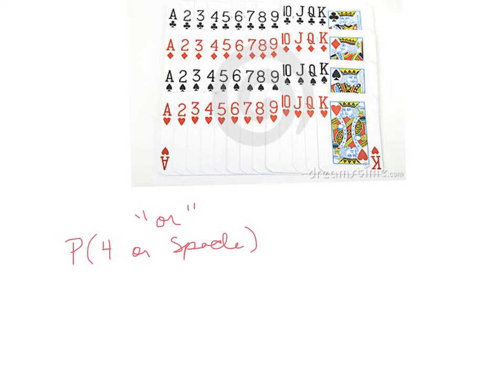So or probability, we're going to add the two events together because now we've increased the amount of ways that we could get what we want. We're back to picking one card, which means we're back to 52 possible events. But now the probability that this can happen, well, we have four fours.